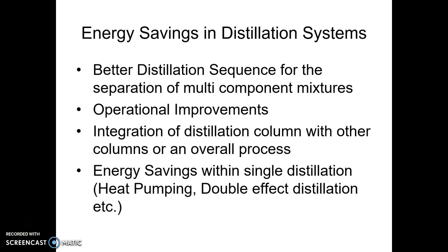In this video we are going to see an introduction to distillation systems and energy savings. Energy savings in distillation systems can be done in multiple ways, starting from a standalone single distillation column that can be served with heat pumping or double effect distillation, or it could be done with the help of operational improvements like changing the pressure, locating the proper feed, or exchanging energy between the outgoing products and incoming feed. If there is a multi-component distillation system, you can make better distillation sequences to save energy by reduction in consumption of reboiler duties, or you can integrate the distillation column with the process or other columns.